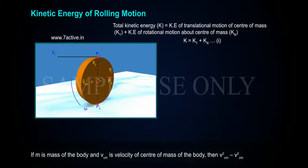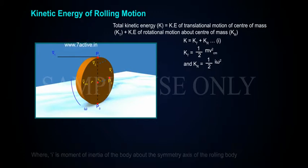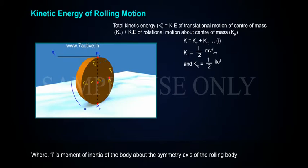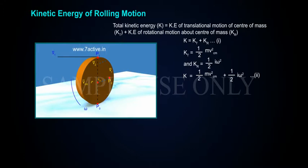If M is mass of the body and Vcm is velocity of centre of mass of the body, then KT is equal to 1 by 2 M Vcm square, and Kr is equal to 1 by 2 I omega square, where I is moment of inertia of the body about the symmetry axis of the rolling body. Substituting in equation 1, K is equal to 1 by 2 M Vcm square, plus 1 by 2 I omega square.